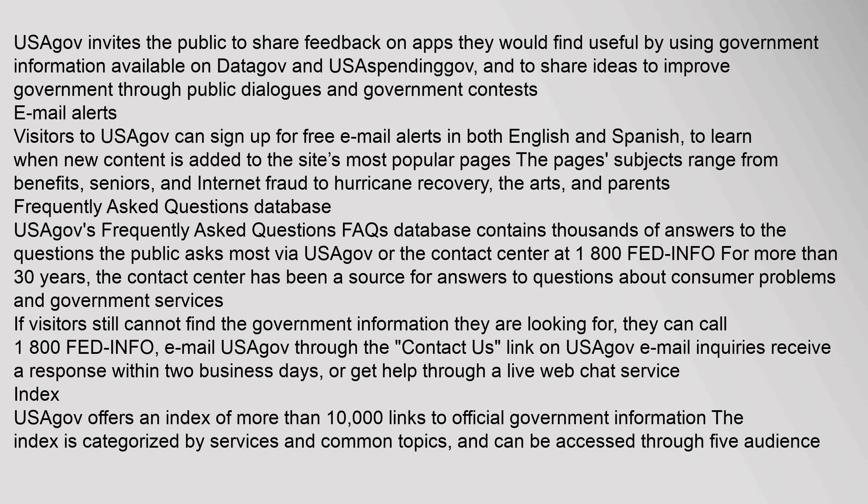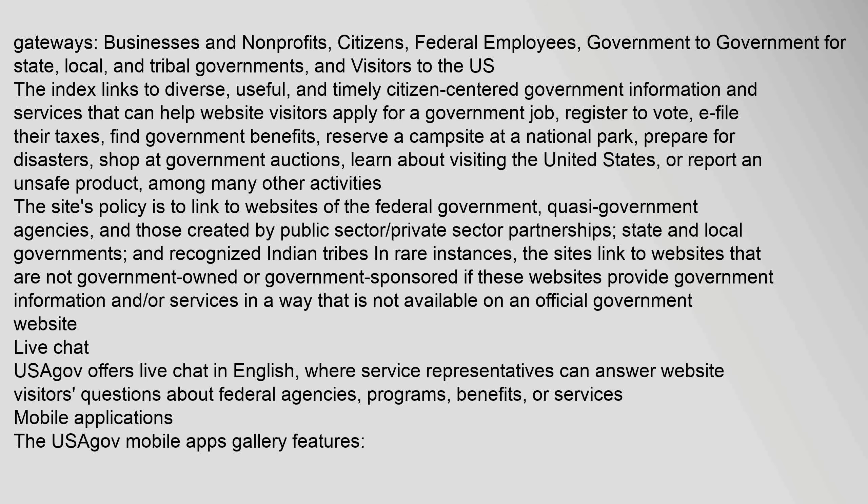Index: USAGov offers an index of more than 10,000 links to official government information. The index is categorized by services and common topics, and can be accessed through five audience gateways: businesses and non-profits, citizens, federal employees, government to government for state, local, and tribal governments, and visitors to the U.S. The index links to diverse, useful, and timely citizen-centered government information and services that can help website visitors apply for a government job,